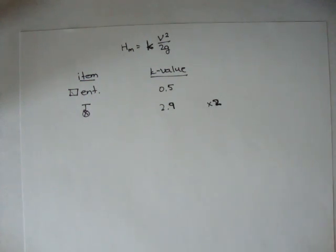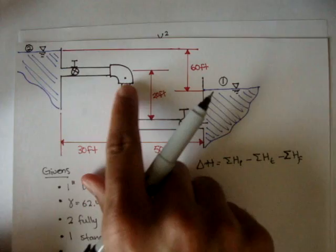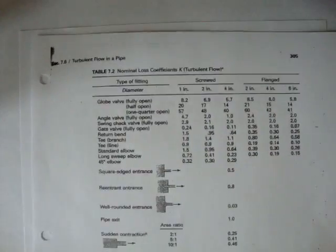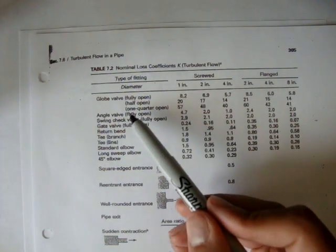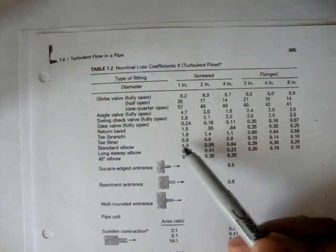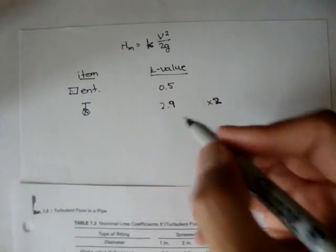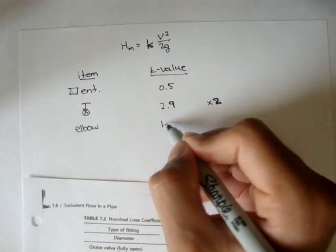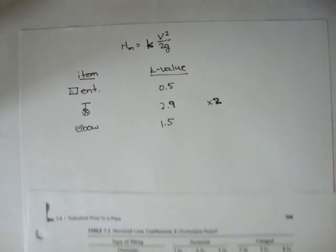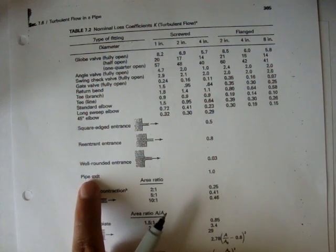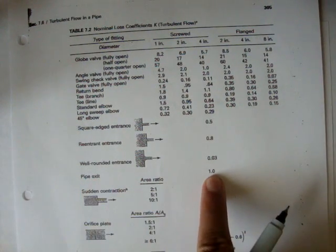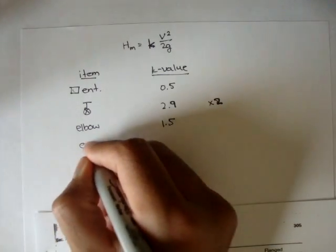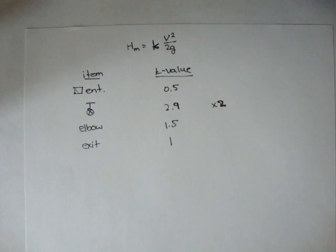And if we look back, we have one elbow. The elbow, if we look here on the table, the standard elbow for a one inch pipe is 1.5. So its k value is 1.5. And we also have an exit, right? A pipe exit to the second reservoir, and its k value is 1. So exit is 1.